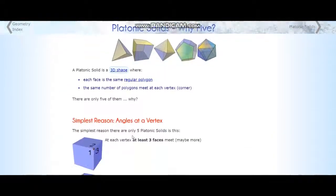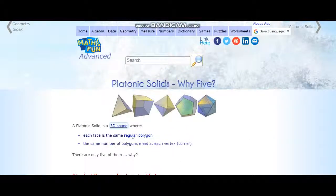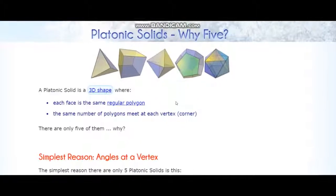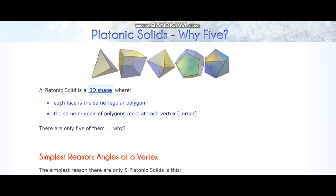In this video I'm going to prove why there are five Platonic solids. We see the definition of a Platonic solid right here: each face is the same regular polygon, and the same number of polygons meet at each vertex.